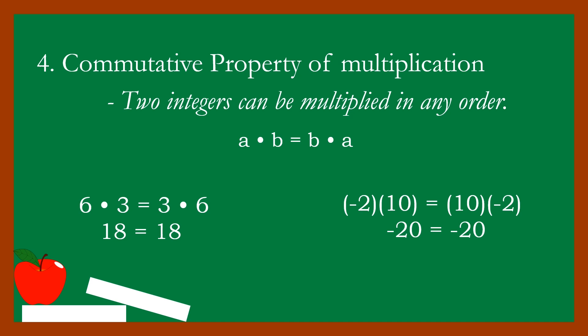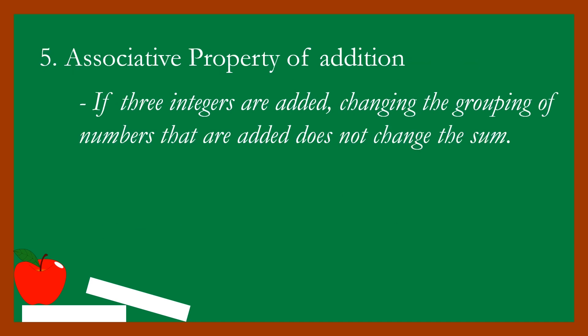Even if the order of the two integers is interchanged, the result is still the same. Property number five: the associative property of addition. If three integers are added, changing the grouping of numbers that are added does not change the sum. The notation is: the sum of (a plus b) plus c is equal to a plus the sum of (b plus c).